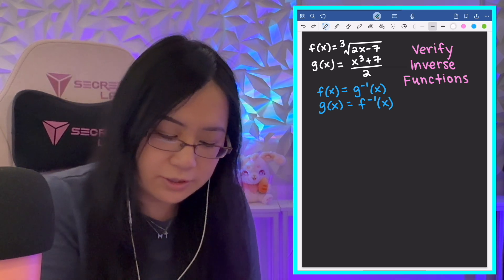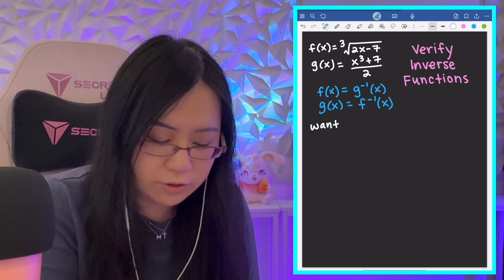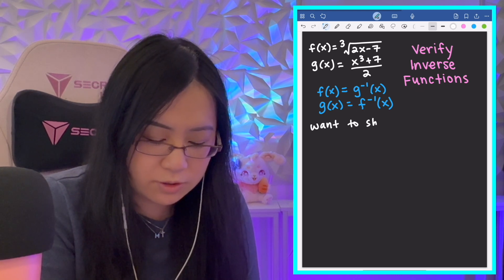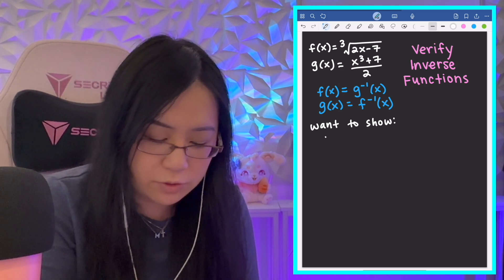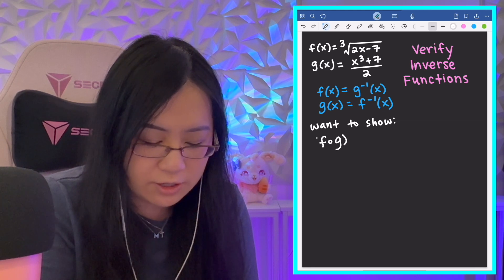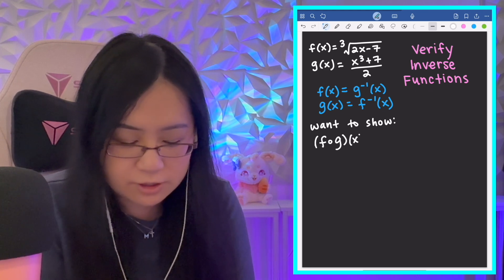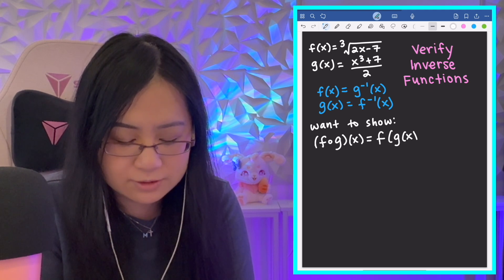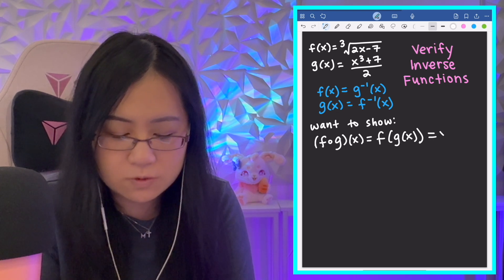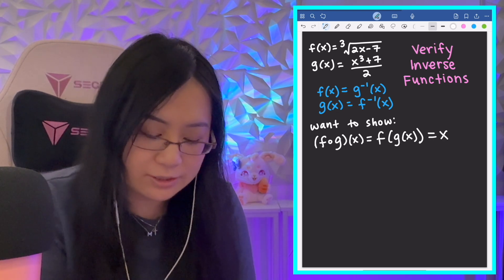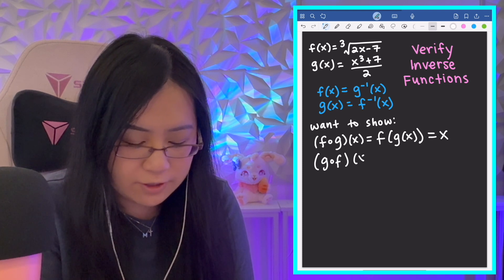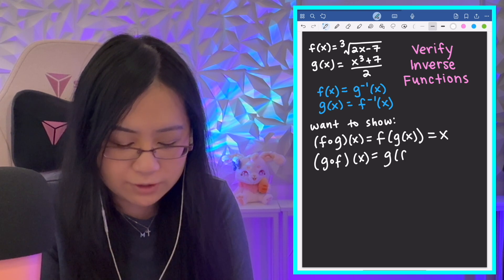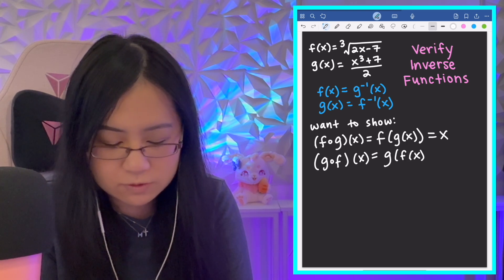So, the key step here is that we want to show, and we're going to use the composition here. We want to show that f of g of x, which I think is easier to understand if we write it like this, f(g(x)). We want to show that f(g(x)) equals x.